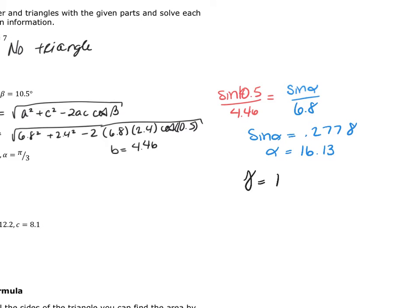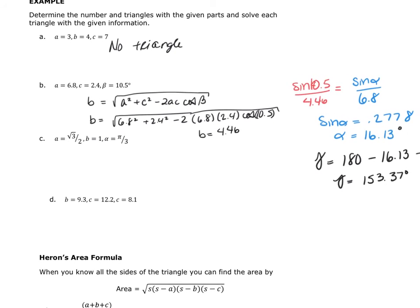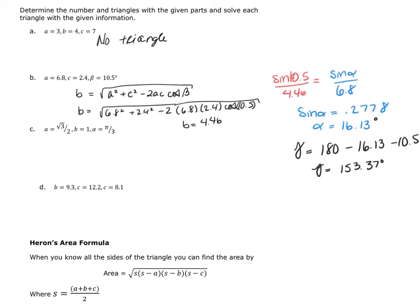Gamma is going to be equal to 180 minus 16.13 degrees minus 10.5 degrees, so 180 minus 10.5 minus 16.13, and I get gamma to be 153.37 degrees. Now let's just make sure this makes sense. My largest side is not C, but my largest angle seems to be C. So either I made a mistake, or there is no triangle — and that could happen. Sometimes they give us numbers that actually don't work out to a valid triangle, and we don't know until we do the work. The time when we get bad information is in the ambiguous case.